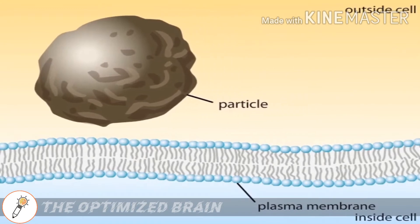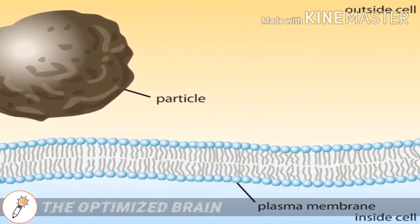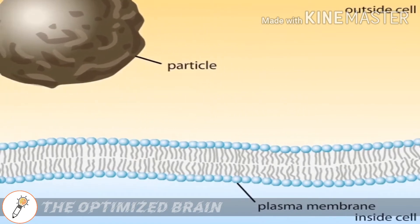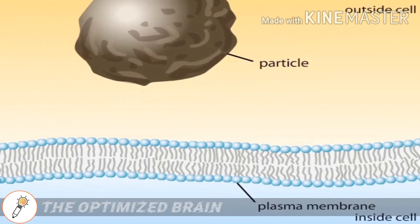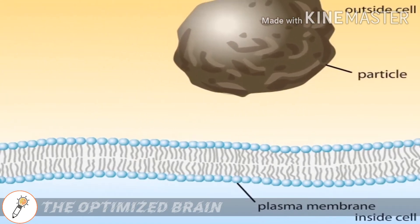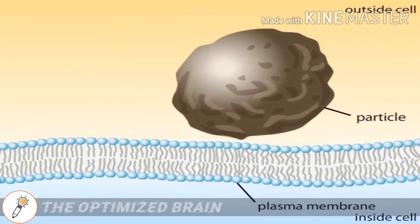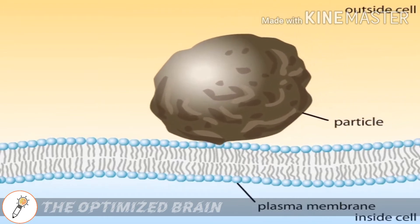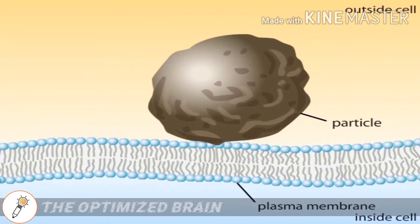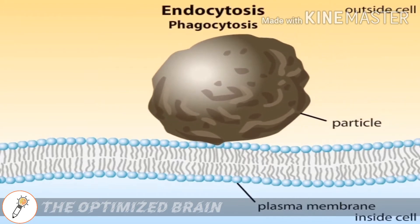Particles or macromolecules that are too large and too charged or polar to pass through biological membranes are taken into cells by a process called endocytosis.